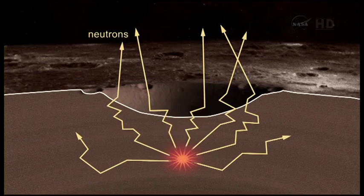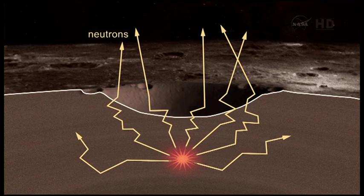Can I have the next graphic? These neutrons, which are illustrated as the narrow yellow lines, they rattle around the surface and some of them escape into space, at which time they can be detected by an instrument called a neutron spectrometer that's flying on board the messenger spacecraft.